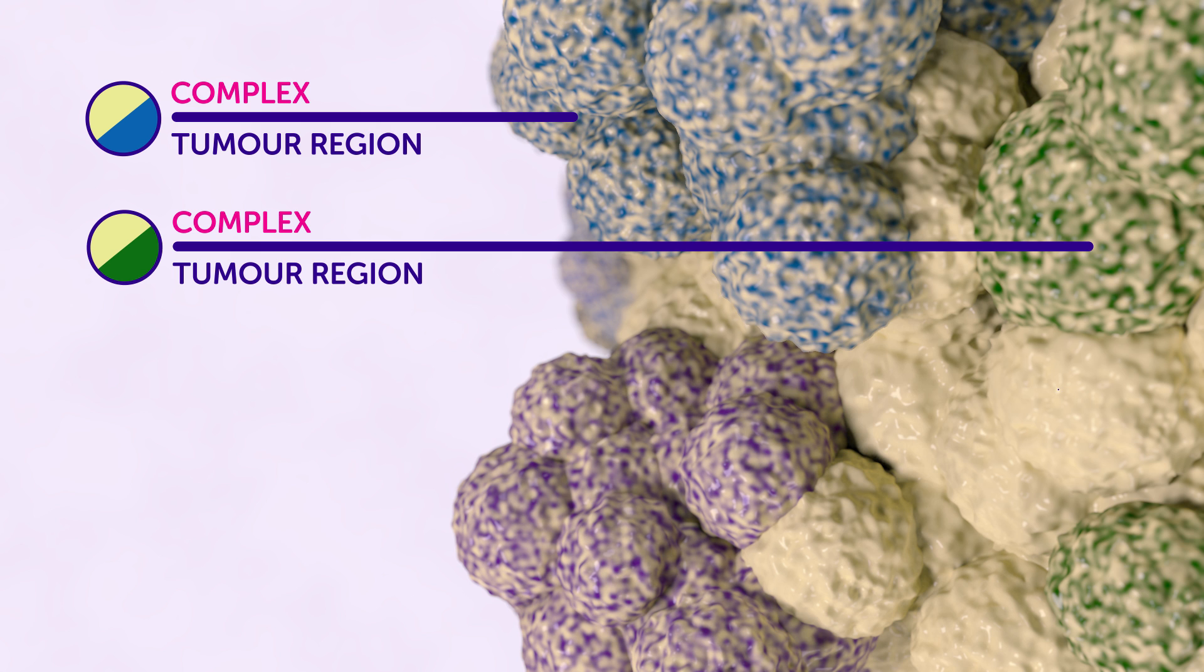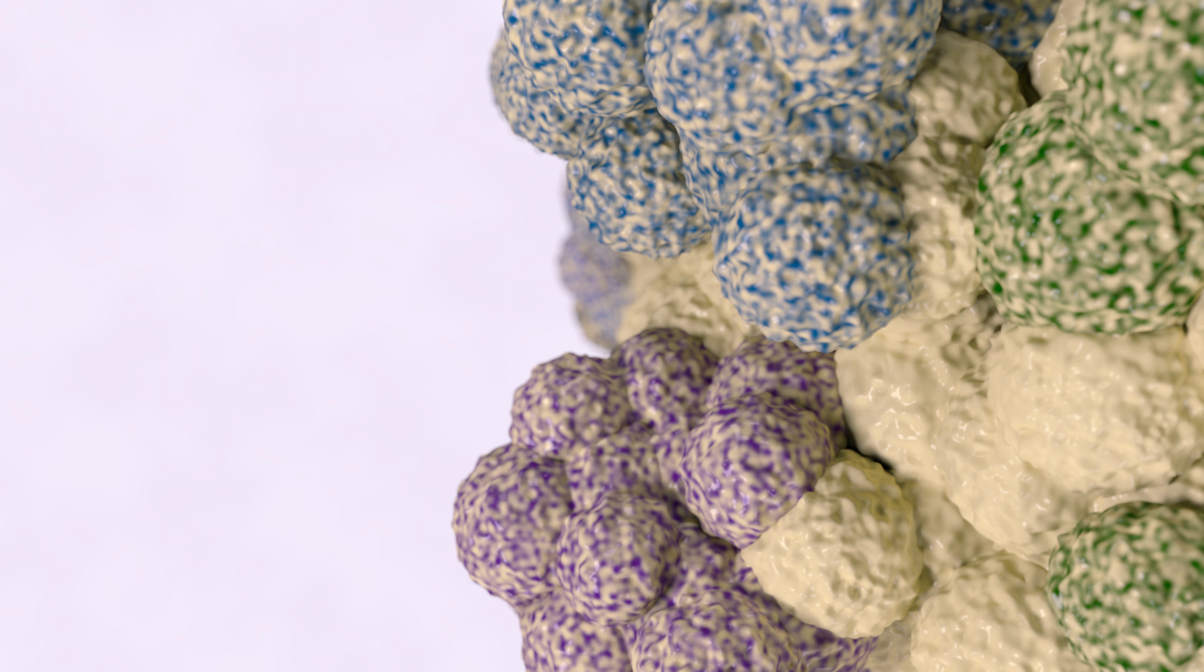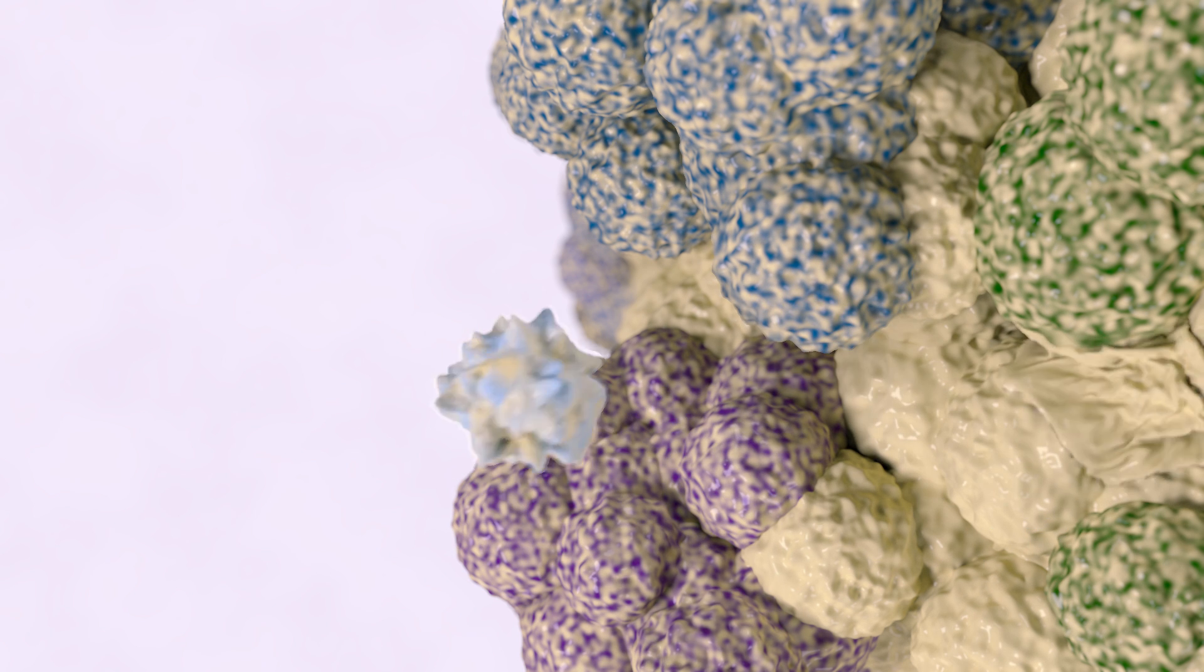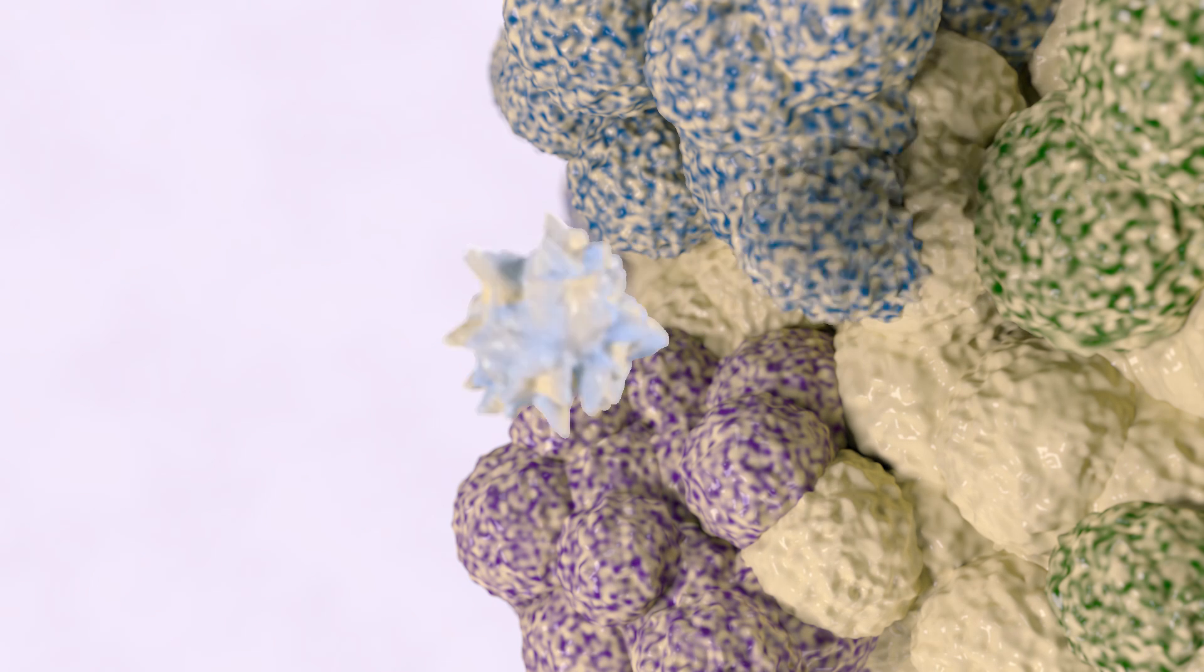But it's become clear that even complex regions of tumors bear hallmarks of their origins, shown here in yellow. And Cancer Research UK scientists have now discovered rare immune cells inside tumors that can recognise these early shared features.